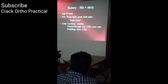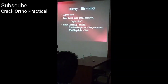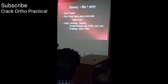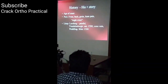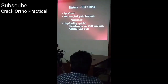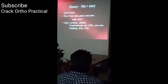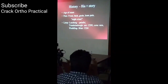Avascular necrosis is extremely important in our country. Hip pain typically radiates to the back, groin, or knee. Most hip pain radiates down to the knee because of the common nerve supply — Hilton's law — involving the femoral nerve, sciatic nerve, and obturator nerve, all supplying both the hip and knee joints. So if a child complains of knee pain, you must examine the hip rather than just the knee.